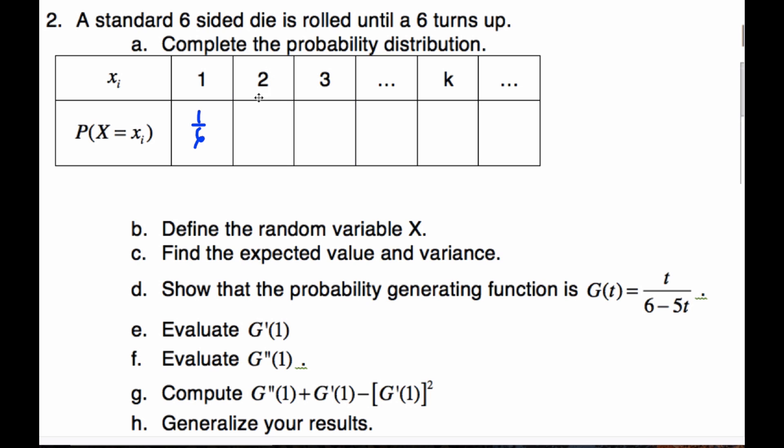On the second throw to get a six, the first one was a fail times the second one was a success. The third one, there's two fails times a success, and so on.